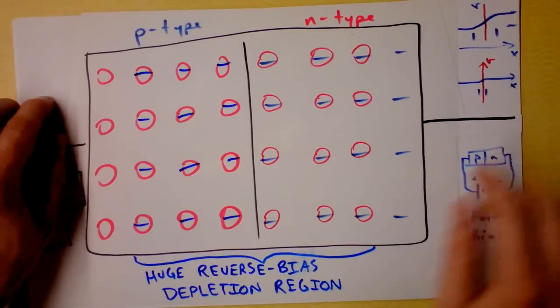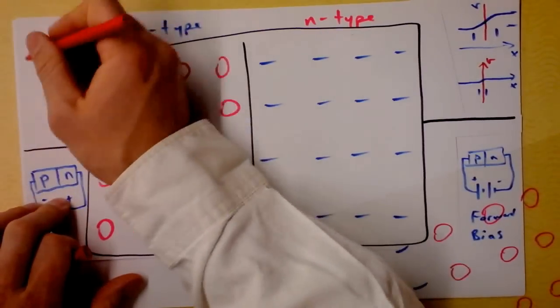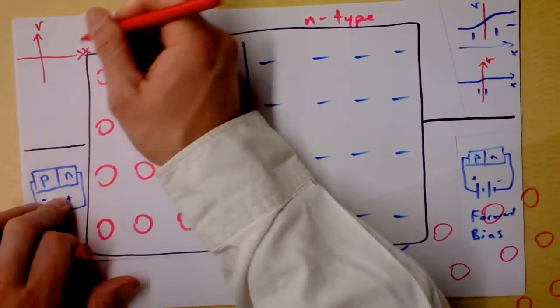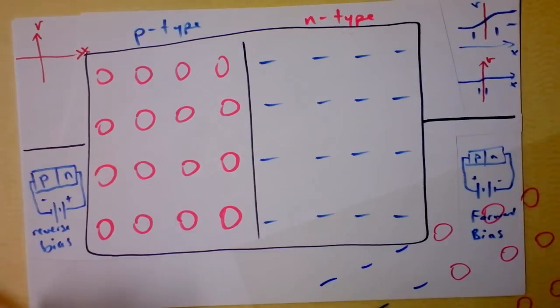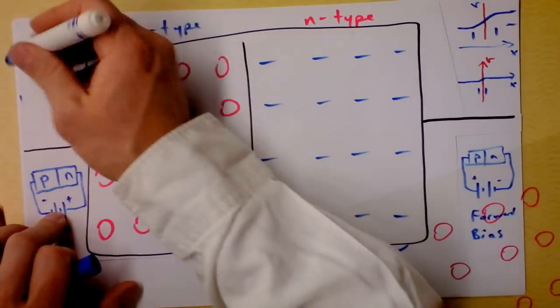I'm going to draw that same sketch that I had over there, but for a reversed bias system, and I'll make a graph of, I'll be a little bit more careful, voltage as a function of separation. And now the depletion region is huge, it's from there to all the way over there,